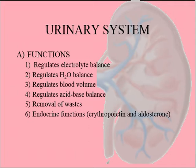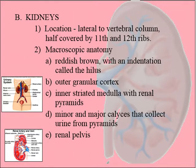We've already learned that erythropoietin and aldosterone are regulated by the urinary system — by the kidneys. We need to do a little review of anatomy before we get started, so recall from anatomy the location of the kidneys.